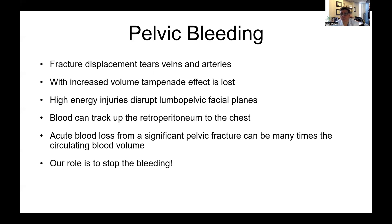Switching gears to the treatment of these injuries — the reason they can be a problem is bleeding. Fracture displacement can tear arteries and veins, it can lead to an increased volume of the pelvis where you lose the tamponade effect of a blood clot, and when there's a lot of disruption, the unstable hemipelvis can move and disrupt the clot. In a really bad fracture, a lot of fascial planes are disrupted and blood can track up and down the patient.